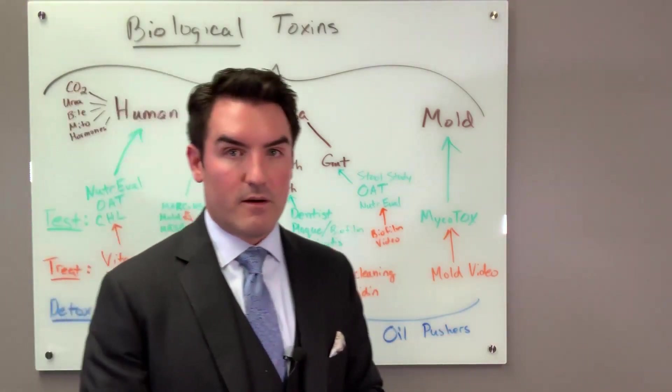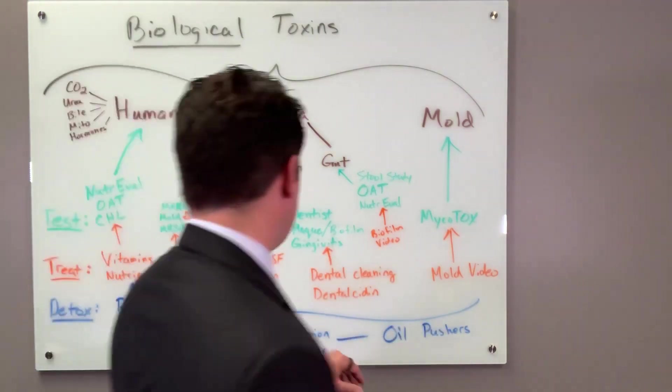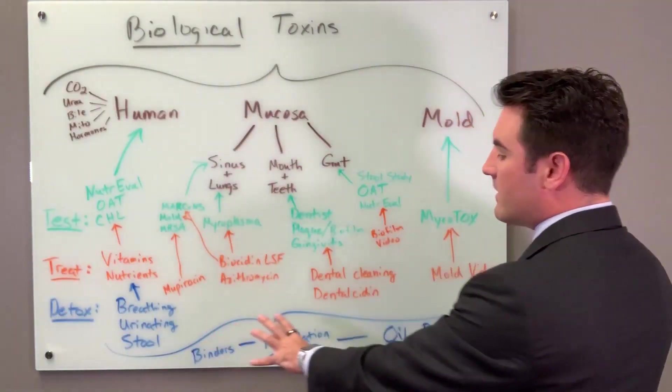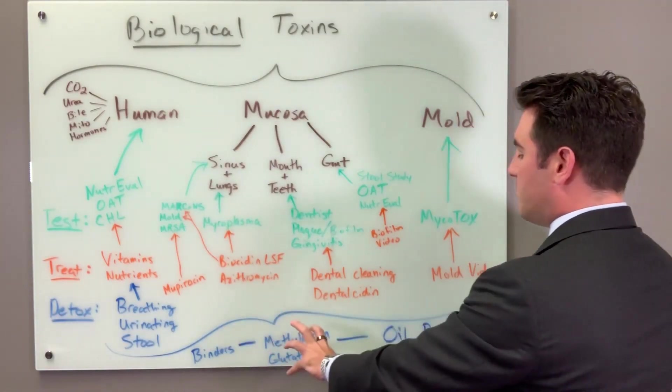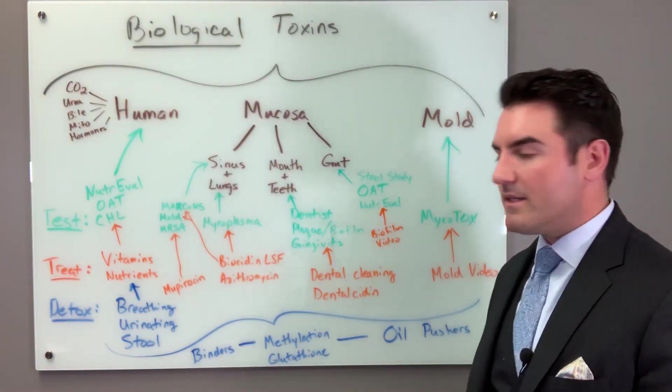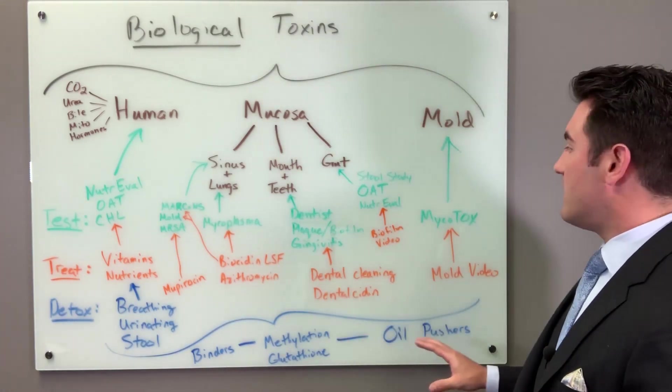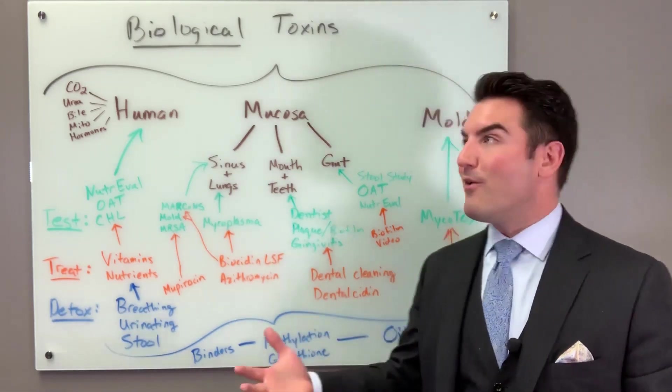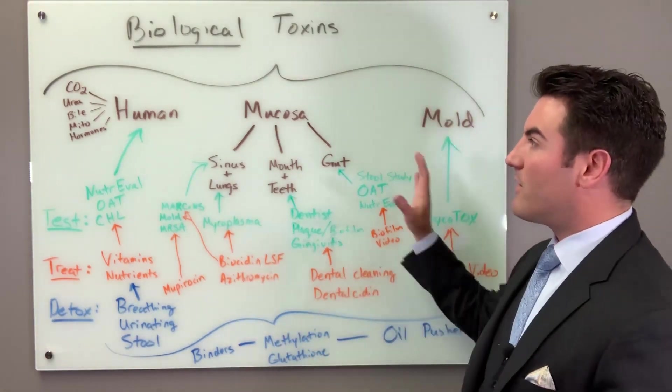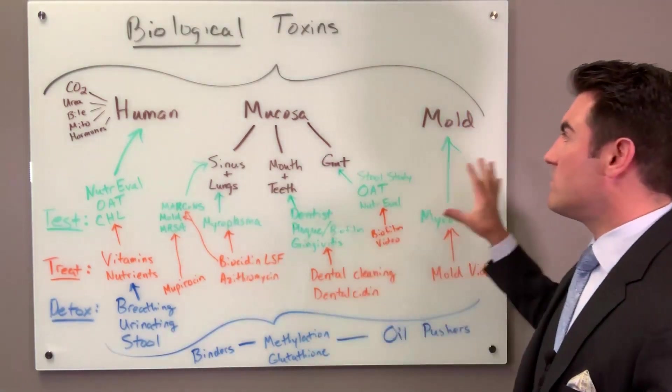And then how do you treat the mold? Well, that is a very complex problem and we will be addressing that. But real simply, let me get out of the way - you're going to use binders, methylation and glutathione, and oil pushers. Kind of this binding, pulling and pushing mentality. And once again, in my detox video, I'll go over each of these in much more detail. So that's my short spiel on biological toxins as far as human mucosal surfaces and mold, and we'll go into more depth on mold in a separate video.